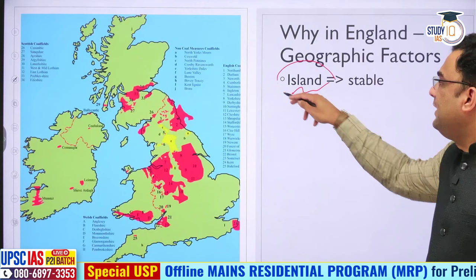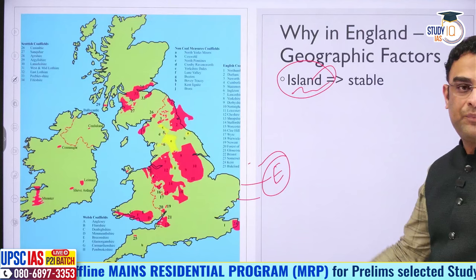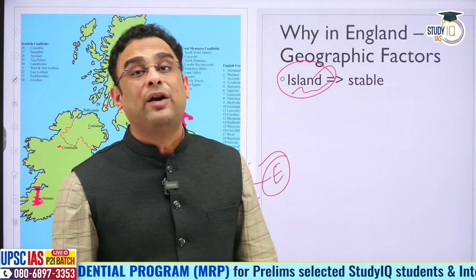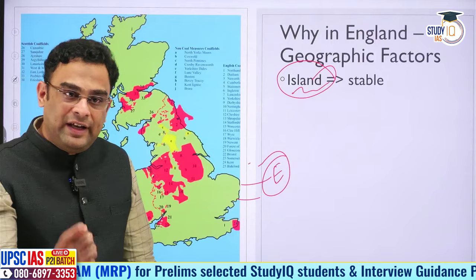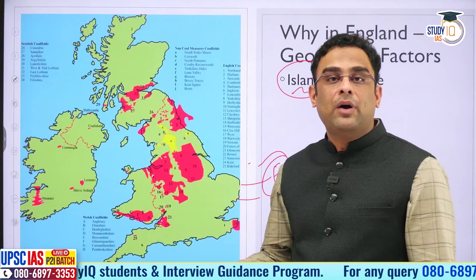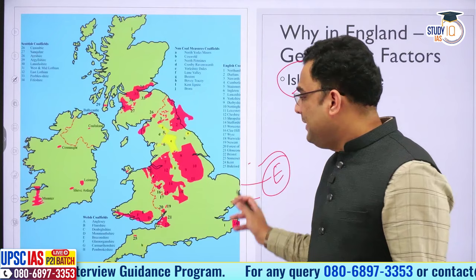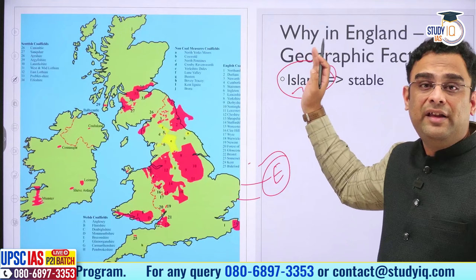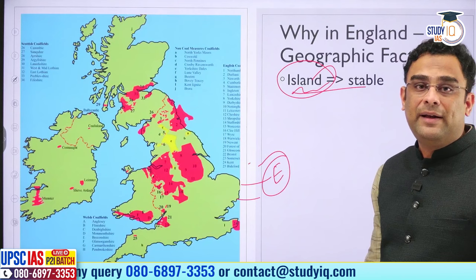Why did it start first in England? First is its island nature. Since Britain was an island, it was away from rest of Europe and not involved in the constant convulsions and wars taking place on the continent — the Hundred Years War, the Thirty Years War, ongoing conflicts between France, Germany, Austria and Russia. Britain, being an island, was much more politically and economically stable, and therefore merchants could invest their money there.